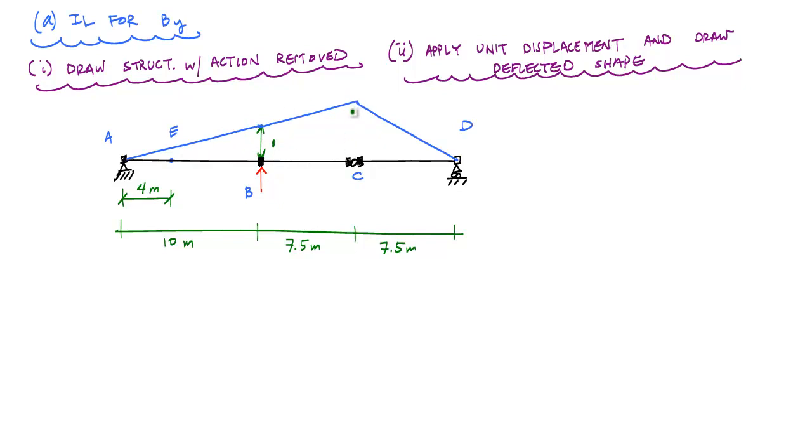I want to find this distance here. The way I can find this, I'll call this Y. The way I can find Y is based on the geometry. In particular, I can use similar triangles, which tells me that Y over 17.5 meters is equal to 1 over 10 meters. And that tells me that Y is equal to 1.75.